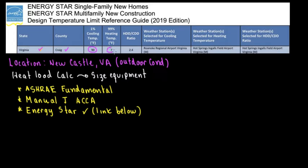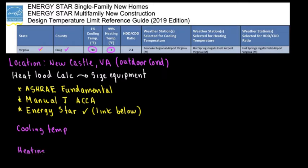Therefore you're going to have your outdoor design temperature. But why two? Because one is for cooling and one is for heating. For cooling you have the warm season; for heating you have the winter or cold season. The cooling temperature is 90 degrees Fahrenheit, and the heating temperature is 7 degrees Fahrenheit. Those are your outdoor conditions.